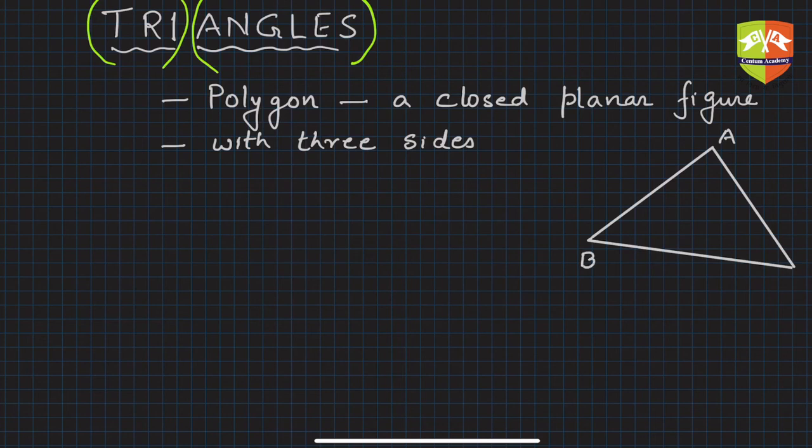For example, this triangle can be named as triangle - we make this Greek letter delta sign. Delta looks like a triangle. Delta is basically a geographic feature, the mouth of the river where it meets the ocean or sea. The water gets distributed and the top view looks like a triangle. So Greek letter delta, and then we write three letters A, B, C. So the name of the triangle becomes triangle ABC.